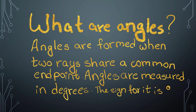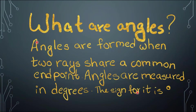What are angles? Angles are formed when two rays share a common endpoint. Angles are measured in degrees. The sign for degrees is this circle over here, and it is usually put on the top right side of the number.